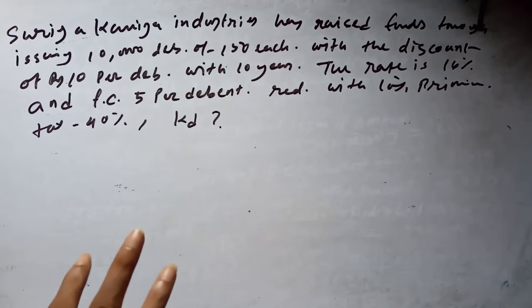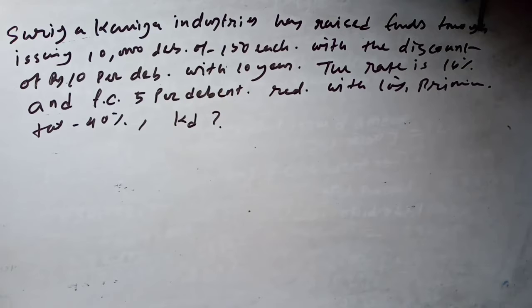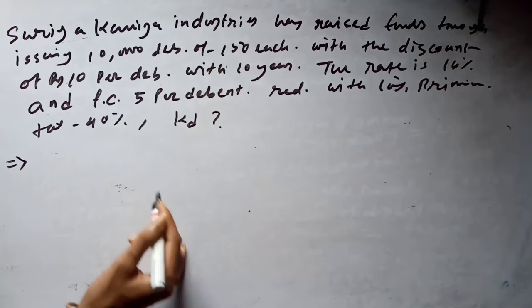This is the limitation for the maturity of debenture. The rate is 14%—I think the coupon rate is, sorry, 16%. And the flotation cost is 5 per debenture, and the debentures will be redeemable with 10% premium. The tax is given as 40%, and we need to calculate what the cost of debt.